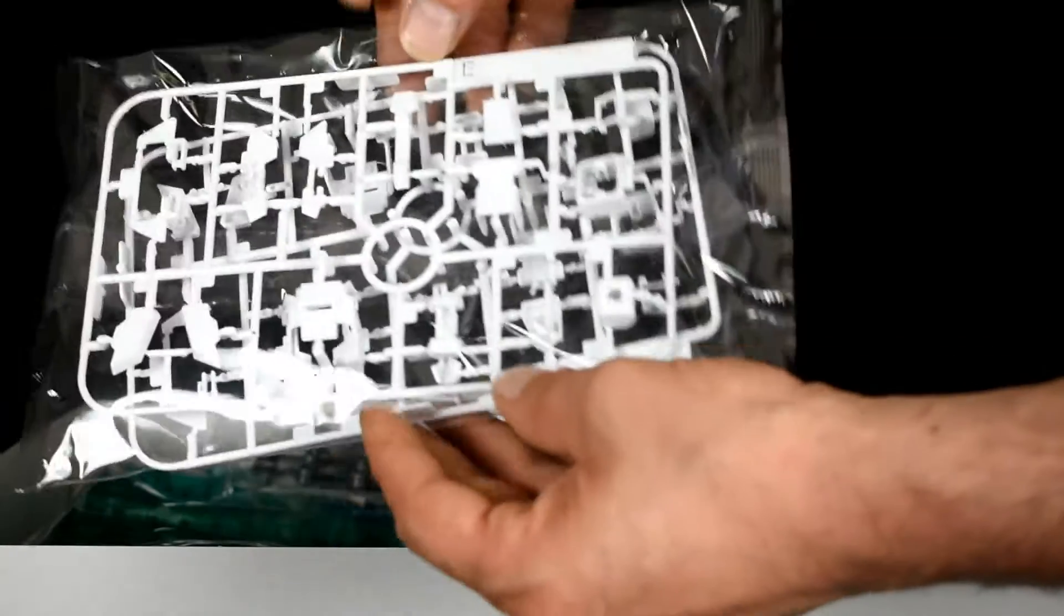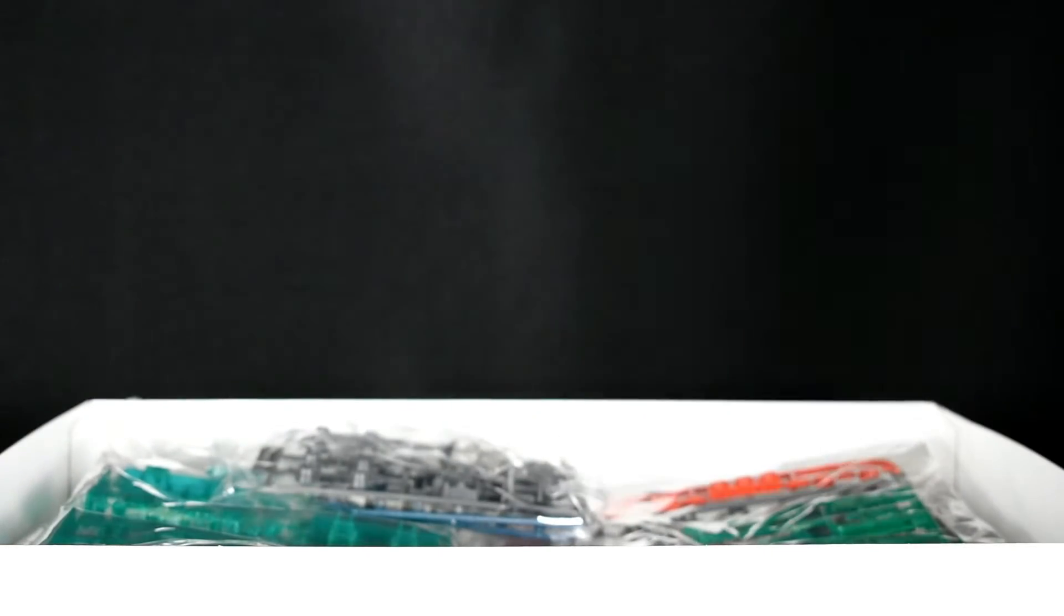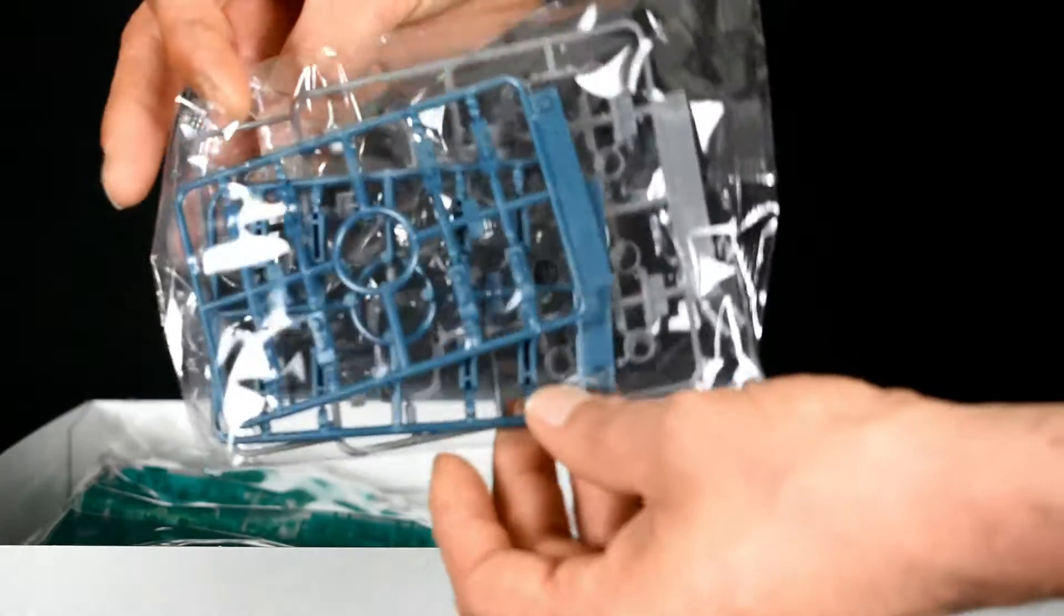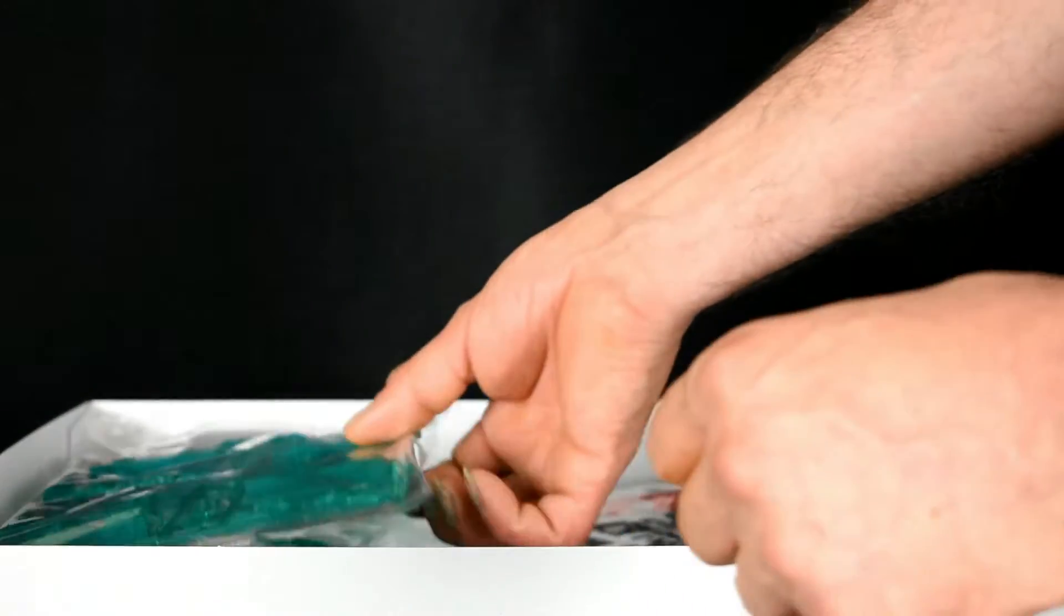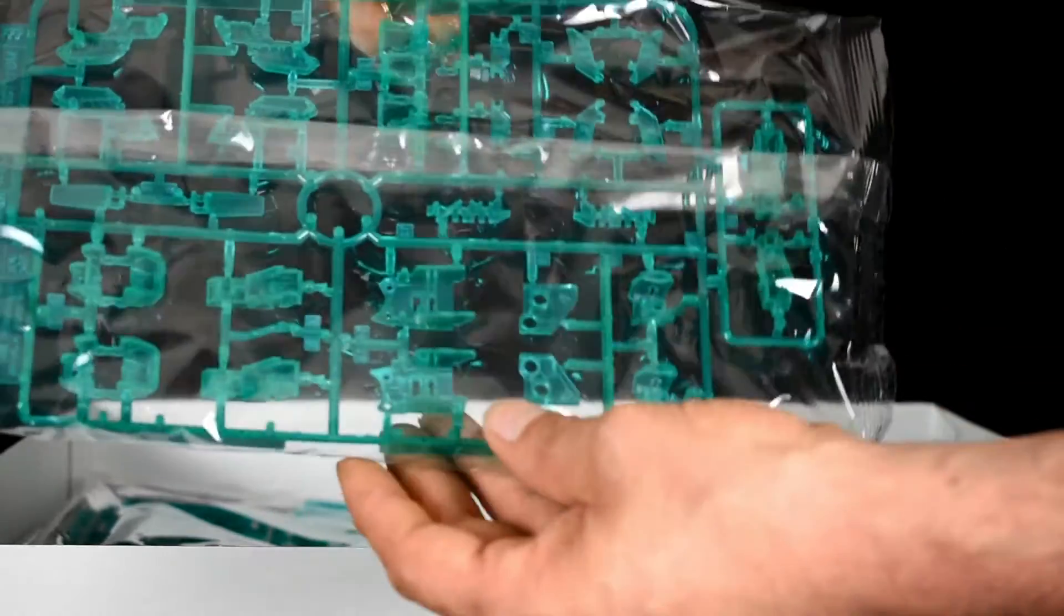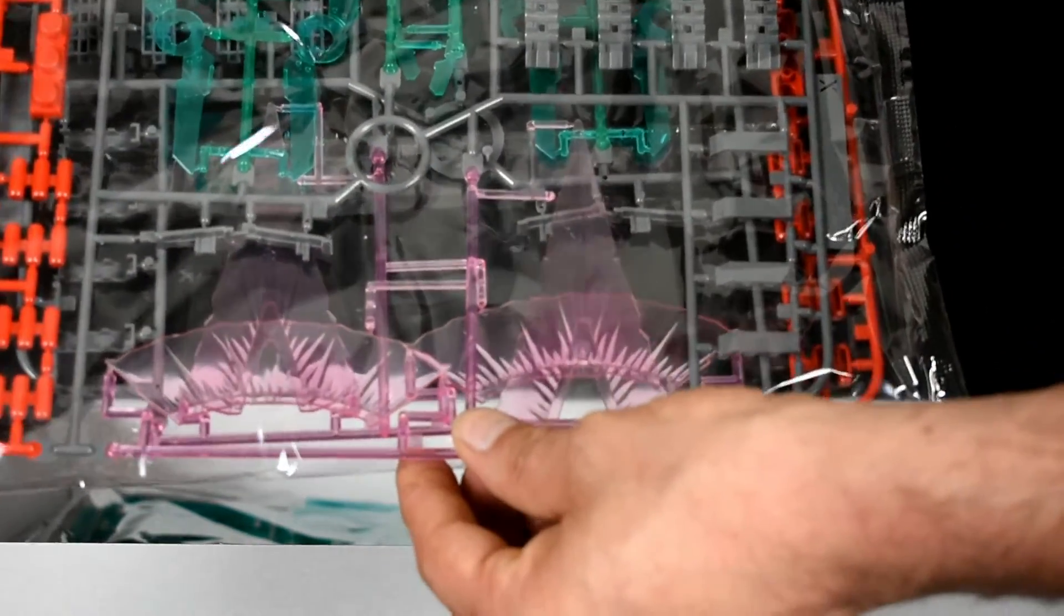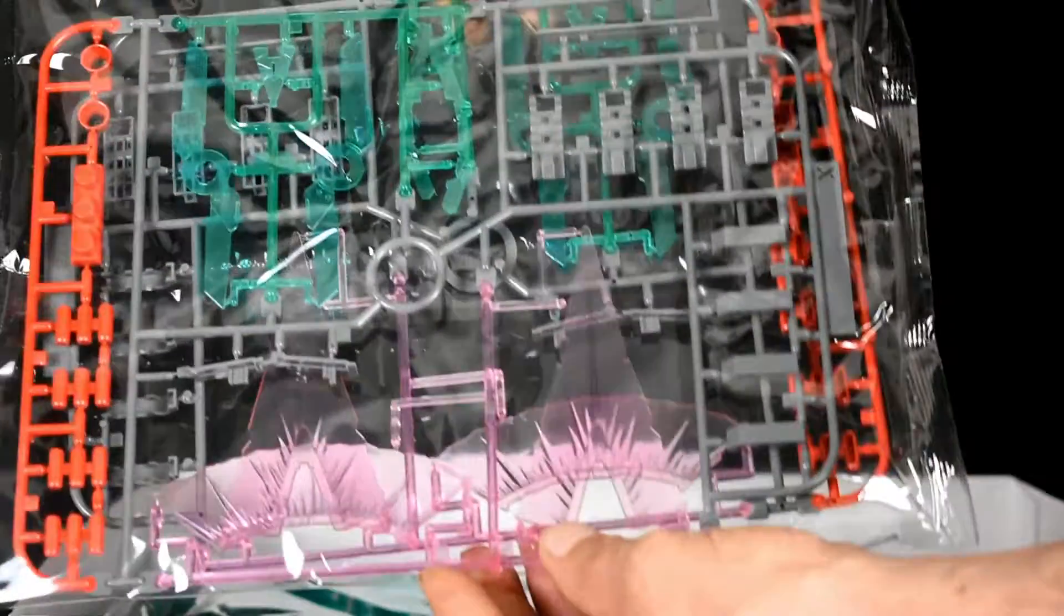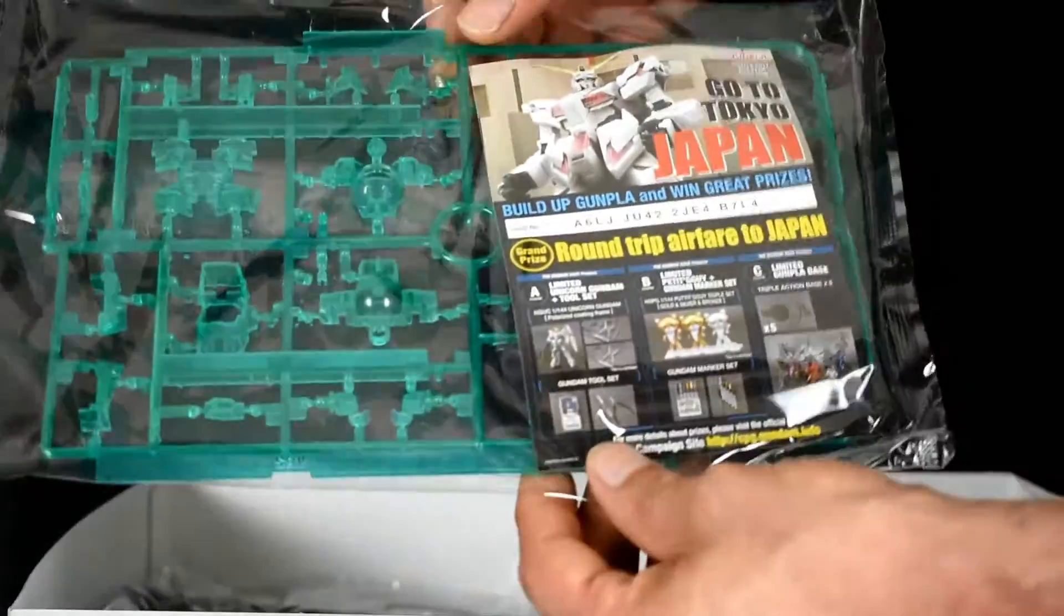I'll also be adding to this video later on all these runners out of the bag so you can see them properly. Here we've got the nice green parts of the psycho frame. These two will be the only multi-color runners in the set. More of the psycho frame.